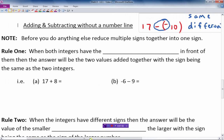It says here, rule one, when both integers have the same sign in front of them, then the answer will be the two values added together with the sign being the same as the two integers.